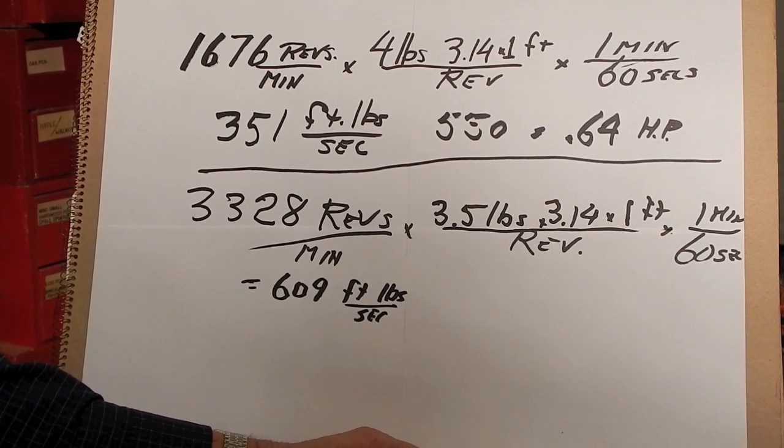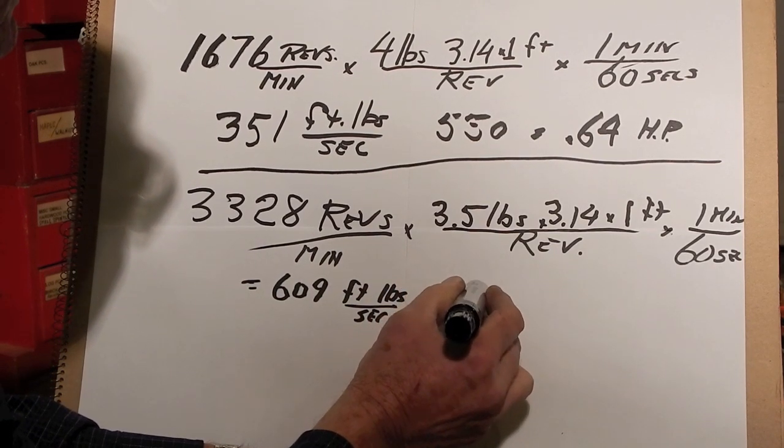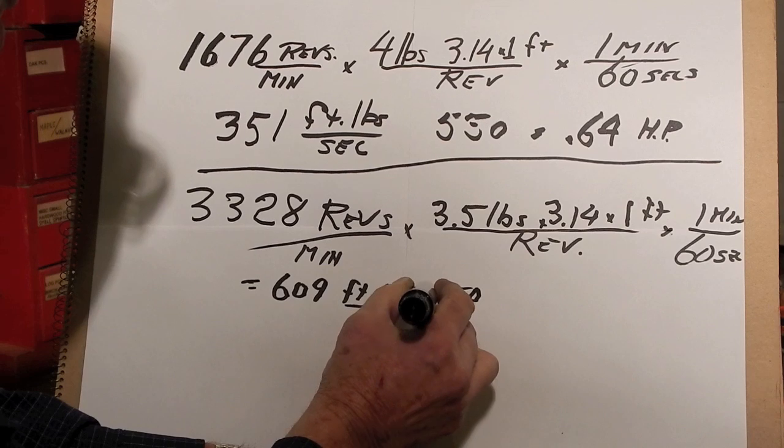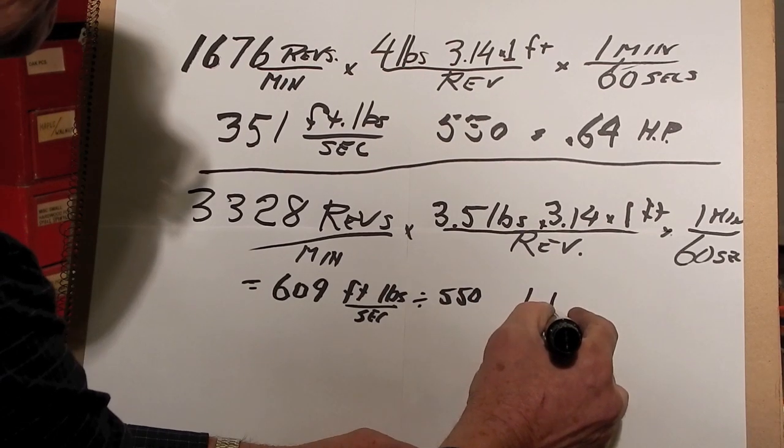Now again, if one horsepower is 550, if we divide by 550, that's 1.1 horsepower.